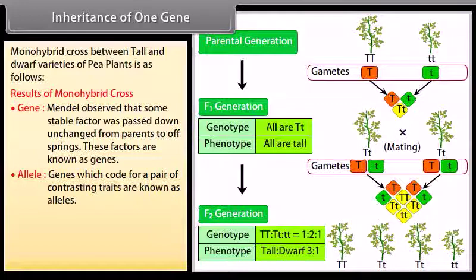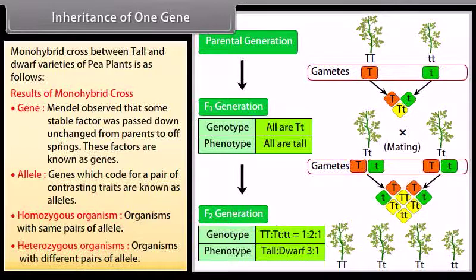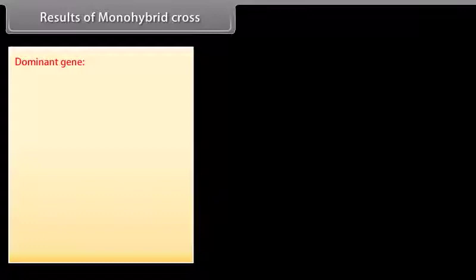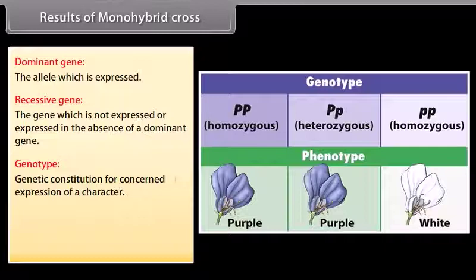Homozygous organism: organisms with the same pairs of alleles. Heterozygous organisms: organisms with different pairs of alleles. Dominant gene: the allele which is expressed. Recessive gene: the gene which is not expressed, or expressed only in the absence of a dominant gene. Genotype: the genetic constitution for the concerned expression of a character. Phenotype: the apparent expression seen due to the combination of two genes.